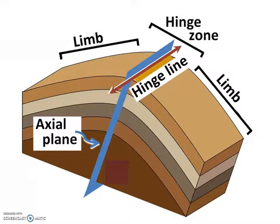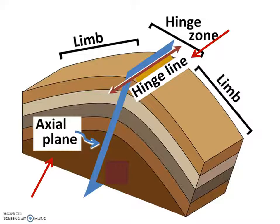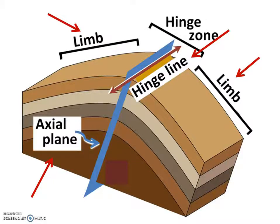There are just a few pieces and parts of a fold that are important to recognize. The hinge line is a line drawn down the points of maximum curvature of each layer, located in the center of the fold. The axial plane is an imaginary surface that divides the fold symmetrically into two limbs, which refer to the two sides of the fold.